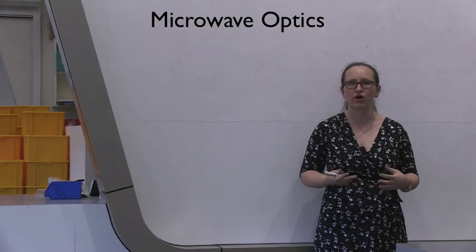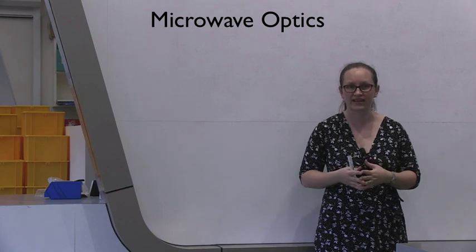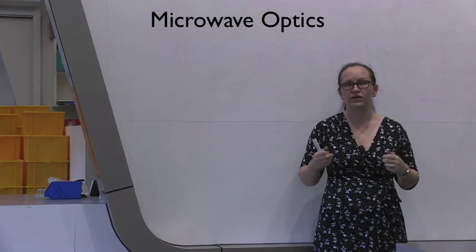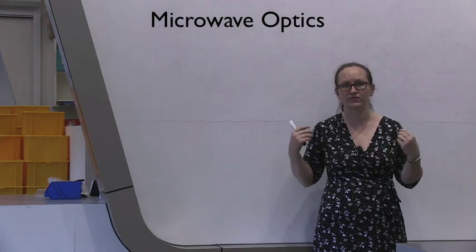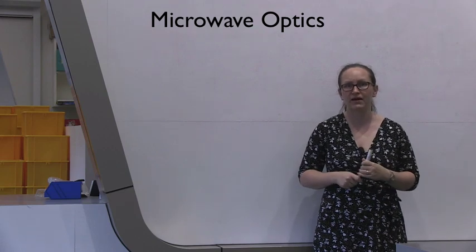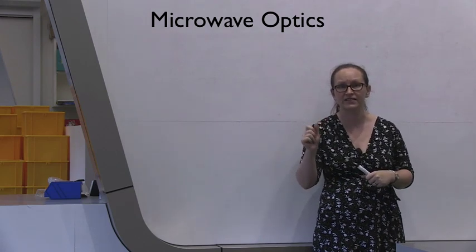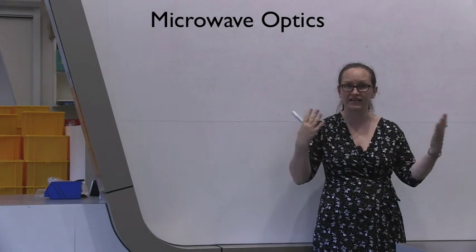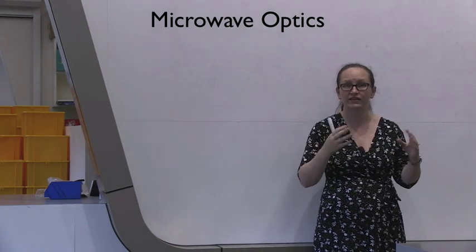Hello, and welcome to the Microwave Optics Laboratory Exercise. In this exercise, you're going to be using microwaves to investigate some of the effects of electromagnetic radiation. You're going to be using microwaves because their wavelength is of the order of centimeters, which makes it easy to observe the phenomena, the interference and diffraction, in the laboratory.